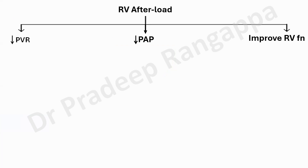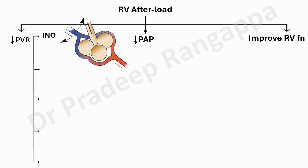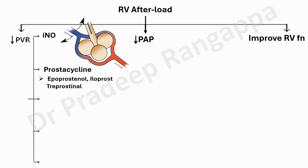At an advanced level, I would want any trainee or consultant to have clarity on how to categorize the drugs into at least five categories. First, inhaled nitric oxide is a potent pulmonary vasodilator that reduces pulmonary vascular resistance. Second are prostacyclins — epoprostenol, iloprost, or treprostinil — which act as pulmonary vasodilators. Third are phosphodiesterase-5 inhibitors, which increase cGMP levels causing pulmonary vasodilation; sildenafil and tadalafil fall into this group.